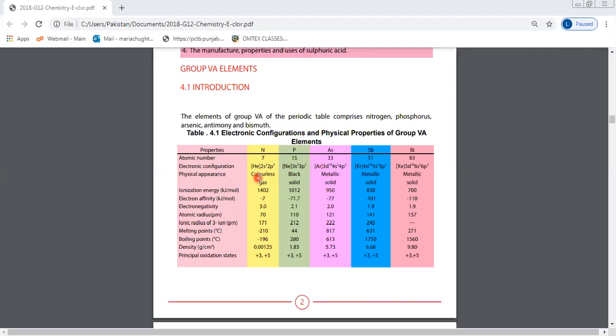Physical appearance: nitrogen is a gas, 78% by volume in the atmosphere, and is colorless. Phosphorus and arsenic, antimony, and bismuth are all solids. Phosphorus is available naturally as a black solid, while arsenic, antimony, and bismuth are metallic solids.